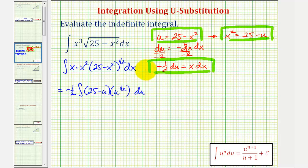Now, let's go ahead and distribute. So we have negative one-half times the integral of, this would be 25 u to the one-half. And this is u to the first. So we have minus u to the three-halves.